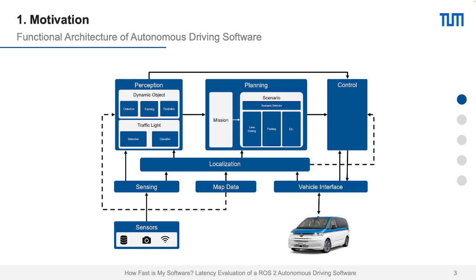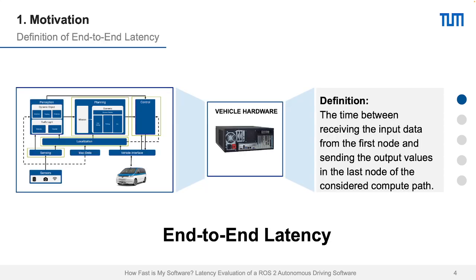One main metric to identify the reliability and the speed of the software stack is the end-to-end latency. The end-to-end latency, per definition, is the time between receiving the input data from the first node and sending the output values in the last node of the concerted compute path. This means we receive sensor data, calculate the behavior and the plan, and control the vehicle on given hardware — and that's exactly the time we want to measure.